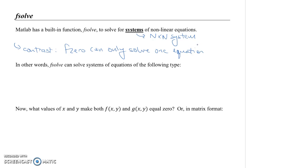In other words, fsolve can solve systems of the following type: something like F(x,y) equals zero, together with G(x,y) equals zero. This here is an example of a two-by-two system. Two equations, two unknowns. The two equations are F equals zero and G equals zero, and the two unknowns are X and Y. So by solving this two-by-two system, you're basically asking the question: what values of x and y make both F and G equal to zero?